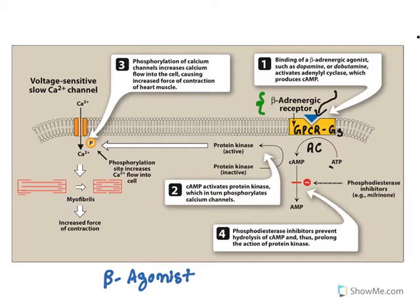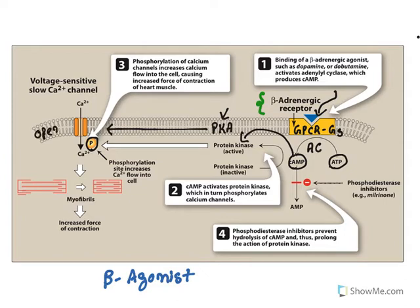The activated adenylyl cyclase converts ATP to cyclic AMP. Cyclic AMP then activates protein kinase A (PKA). Kinases phosphorylate their substrates, and the substrate for this protein kinase A is the voltage-sensitive calcium channel. Phosphorylation of this channel results in opening of the calcium channel, and calcium entry occurs — that is what causes increased force of contraction.